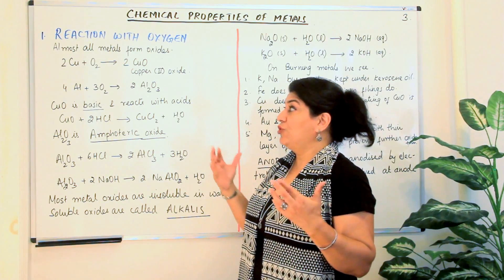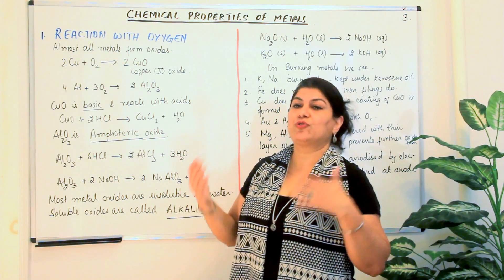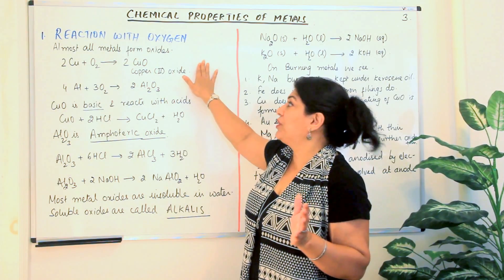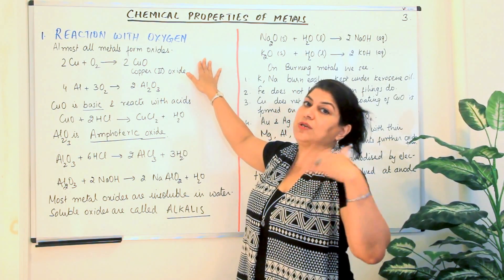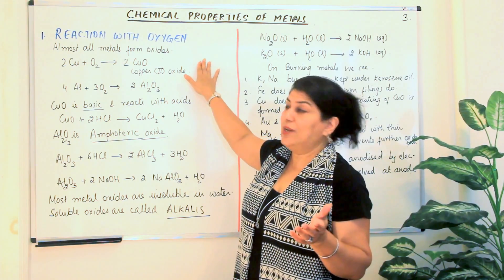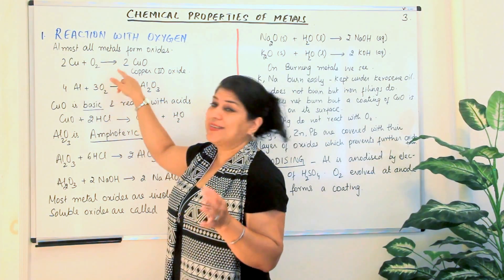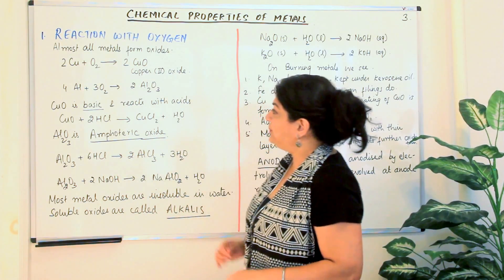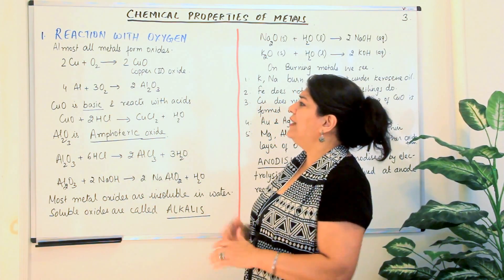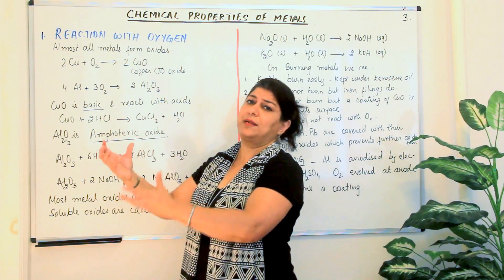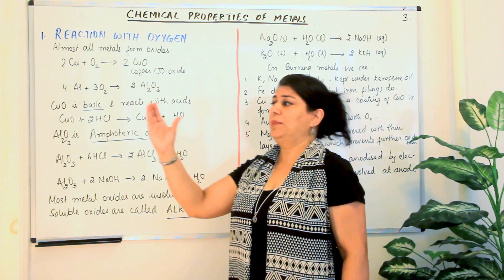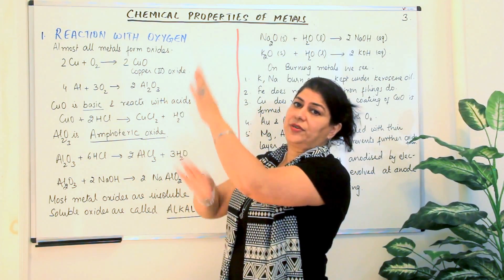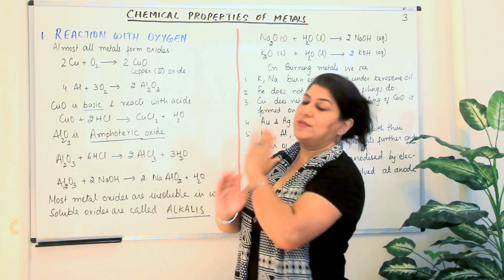If you do not have time for that approach, you could rote-learn the equations, but I would not suggest it because you tend to forget them and make small mistakes. The simple logic is: metals combine with oxygen to form oxides. There will be a metal atom, an oxygen atom, and the valencies crisscross to give you the formula, then balance the equation.